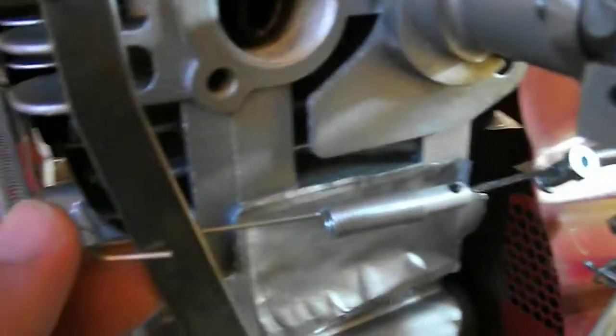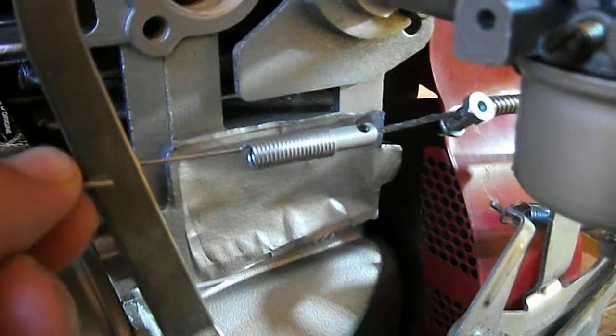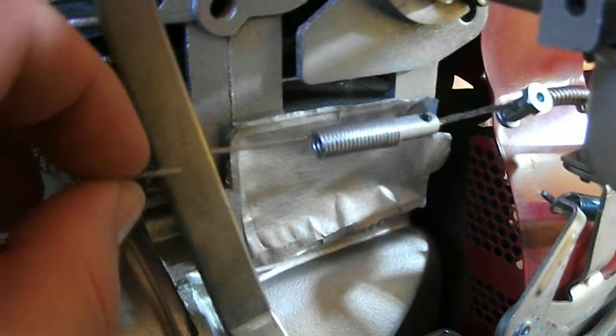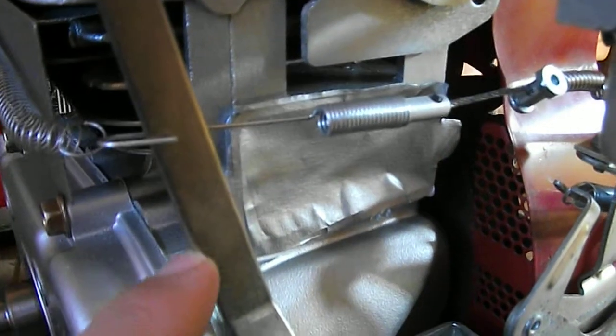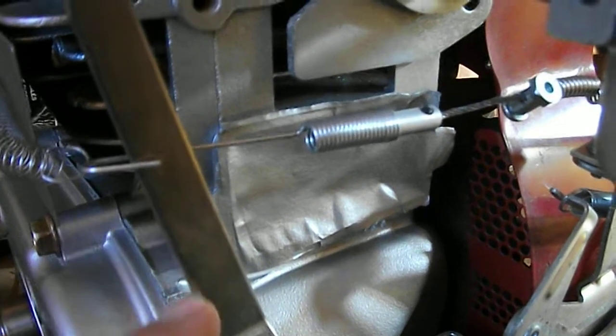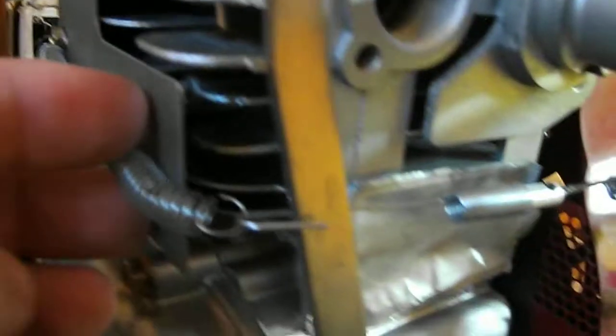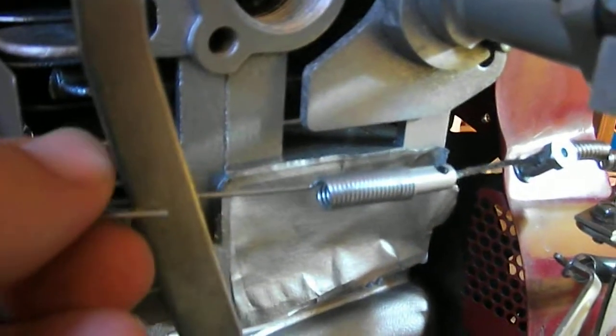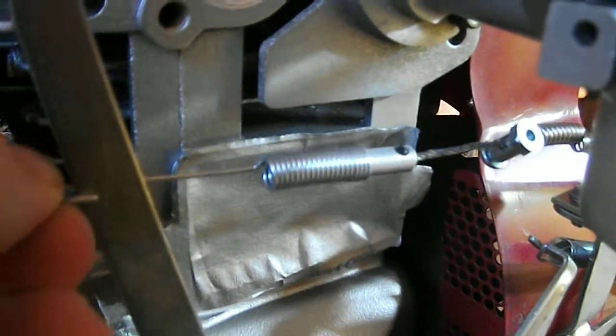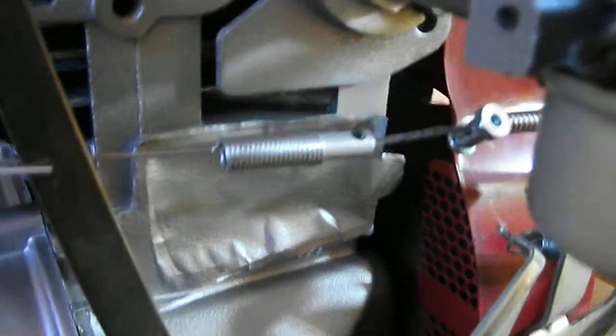Got this spring here to hold this in place because this throttle lever wanted to start going down here and then it wasn't functioning properly. So I've got the spring on this bolt to keep it in place, keep it straight, and then keep the throttle cable nice and tight and straight.